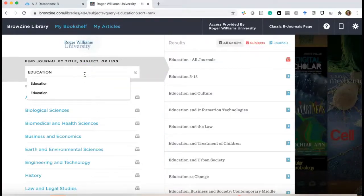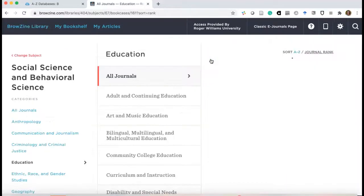Say I was studying education and I needed to find scholarly articles in education journals. I type in education and you can see it's color coded by red and blue. Red signifies all the journals that we have in education.